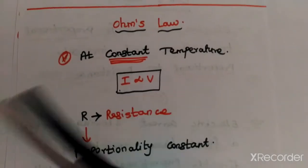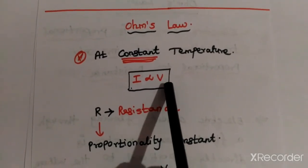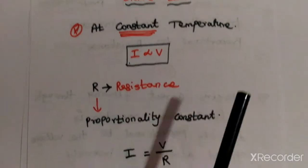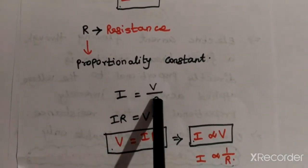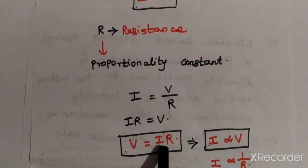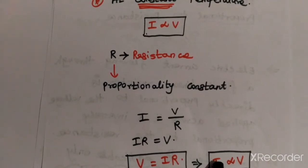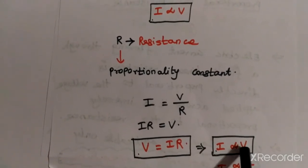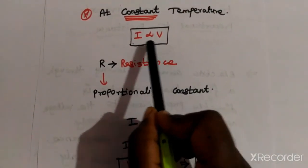Ohm's Law finally states that at constant temperature, the current flowing through the circuit is directly proportional to the voltage across it. The proportionality constant is R, the resistance. So we write I = V/R. Rearranging, IR = V, or V = IR. The correct statement of Ohm's Law is: at constant temperature, current is directly proportional to voltage — not the other way around.